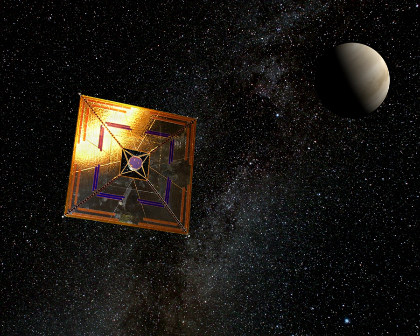IKAROS has a diagonal spinning square sail 14 by 14 meters, 196 square meters, made of a 7.5 micrometer thick sheet of polyimide. The polyimide sheet had a mass of about 10 grams per square meter. A thin-film solar array is embedded in the sail. Eight LCD panels are embedded in the sail, whose reflectance can be adjusted for attitude control. IKAROS spent six months traveling to Venus, and then began a three-year journey to the far side of the Sun.